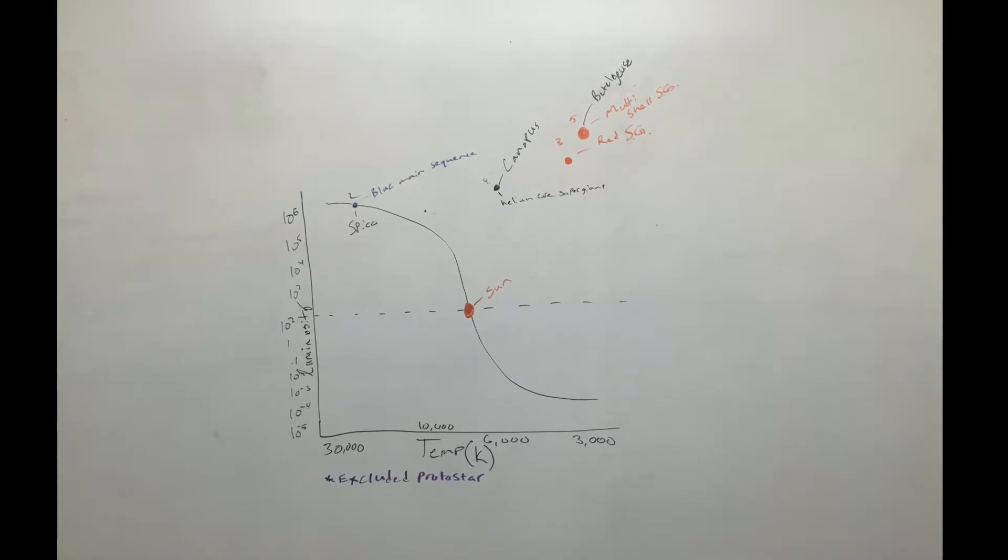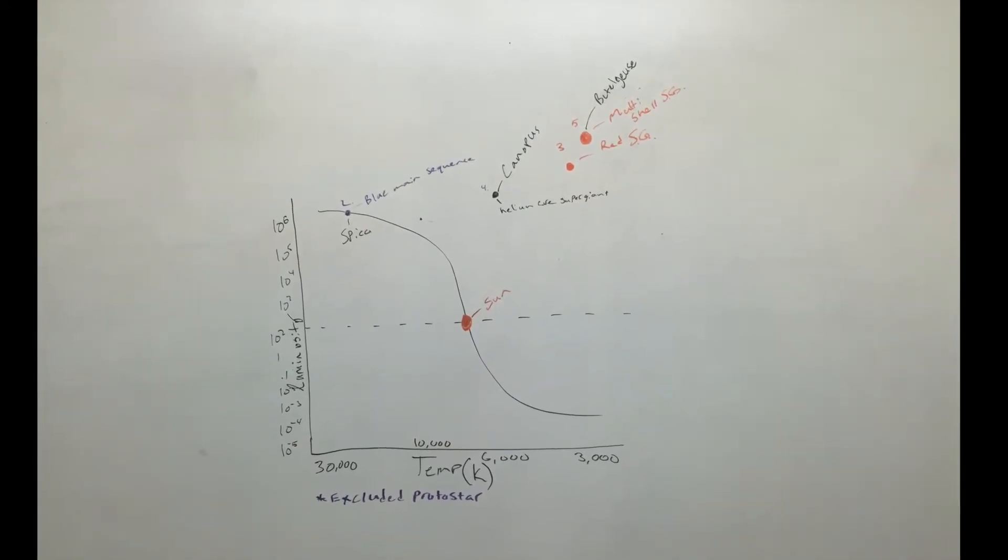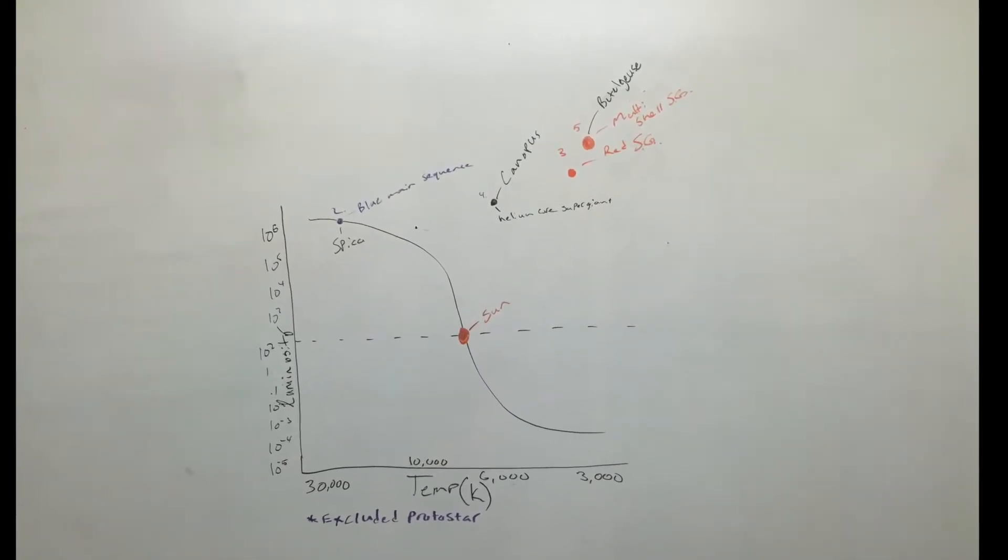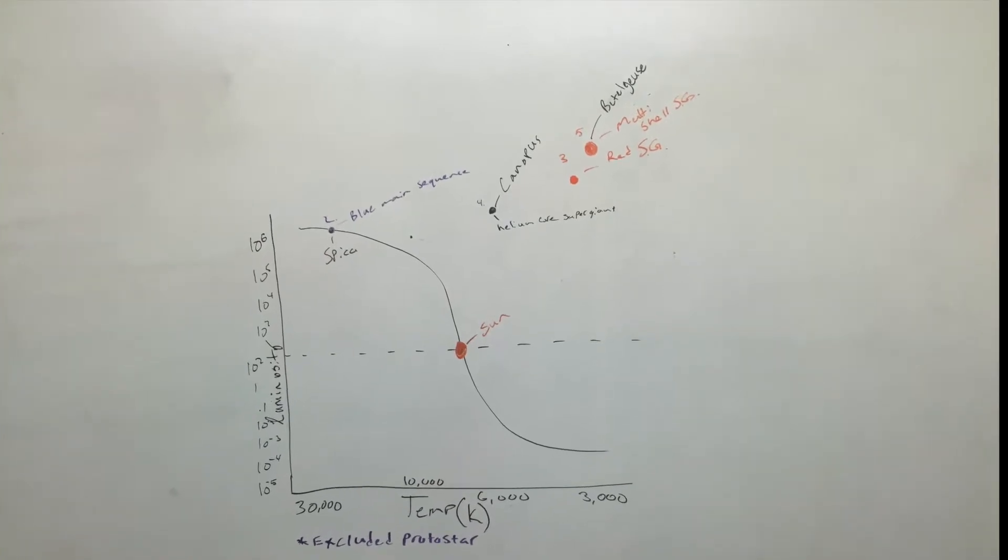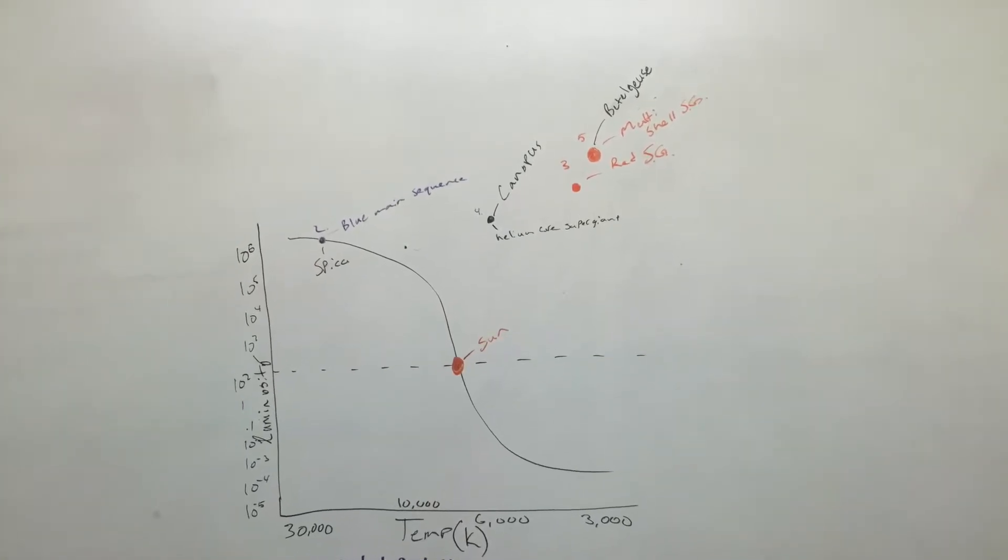After this, a red supergiant begins to form. The core hydrogen exhausts, the core shrinks and heats. Hydrogen fusion begins around the inert helium core, causing expansion in the star.